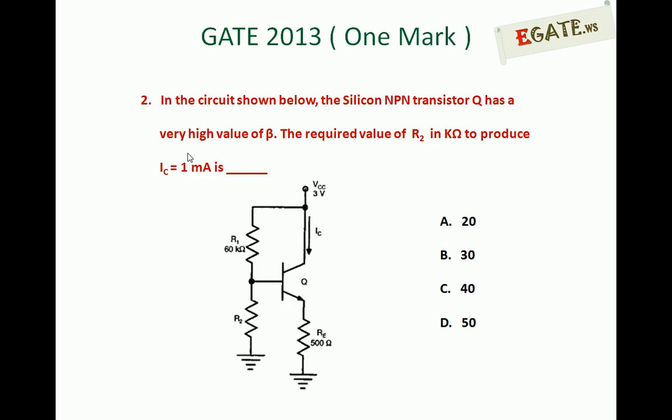The question given is: In the circuit shown below, the silicon NPN transistor Q has a very high value of beta. The required value of R2 in kilo ohms to produce IC equals 1 milliampere is: A) 20, B) 30 kilo ohms, C) 40 kilo ohms, D) 50 kilo ohms.